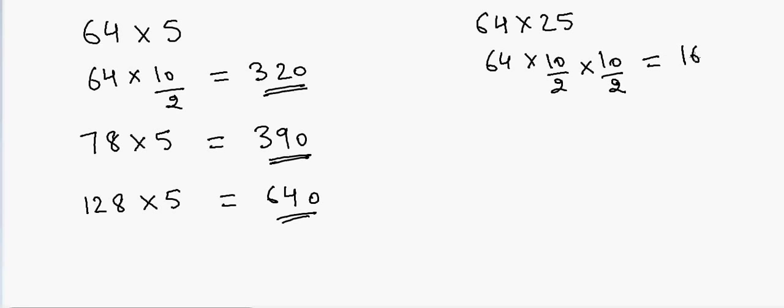The answer is 1600. Again, if I have 128 and want to multiply by 25, in that case it will be equal to half of 128, which is 64, and half of 64 is 32, so it's 3200.